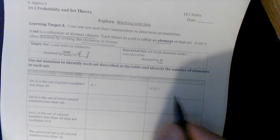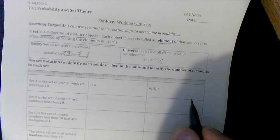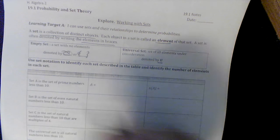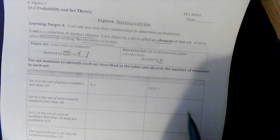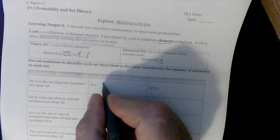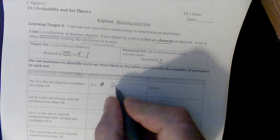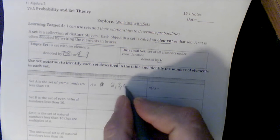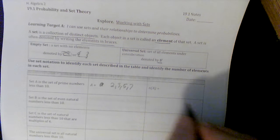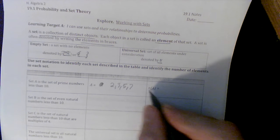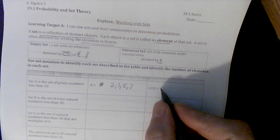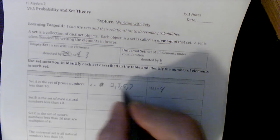So identify set notation in each element. A is a set of prime numbers less than 10. So A would be prime numbers. I started at 1, I should have started at 2, 3, 5, and 7. And this notation says the number in set A - that's how many elements are there. We can see there's 4: 1, 2, 3, 4 elements.